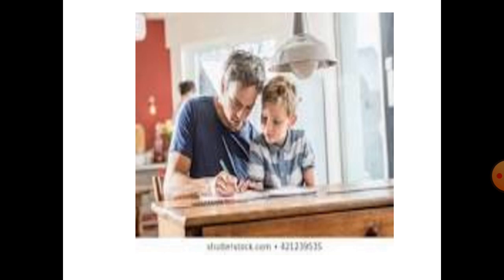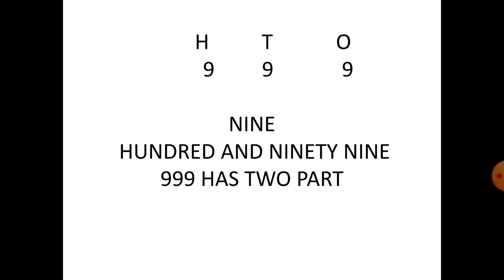Let us learn the number names of digits. We have nine hundred and ninety-nine — this is a three-digit number. We divide it into two parts: in the first part we have nine hundred, and in the second part we have ninety-nine. So nine hundred and ninety-nine: first part is nine hundred and the second part is ninety-nine.